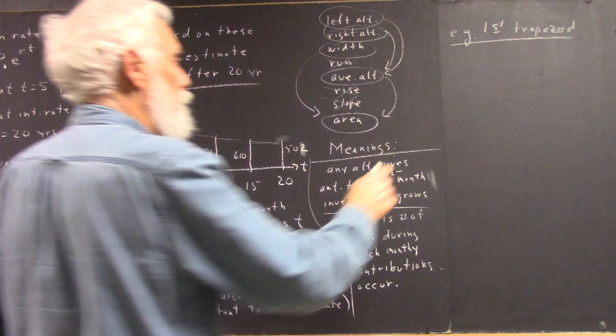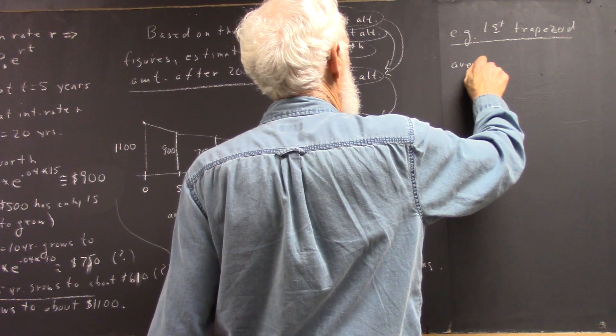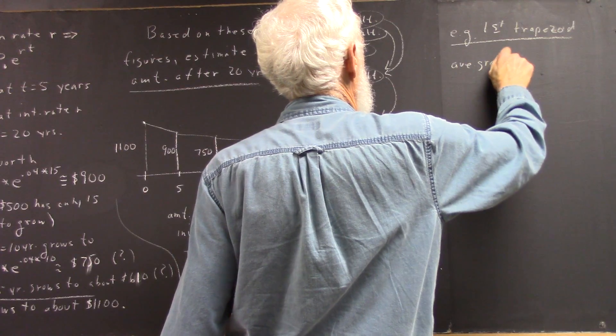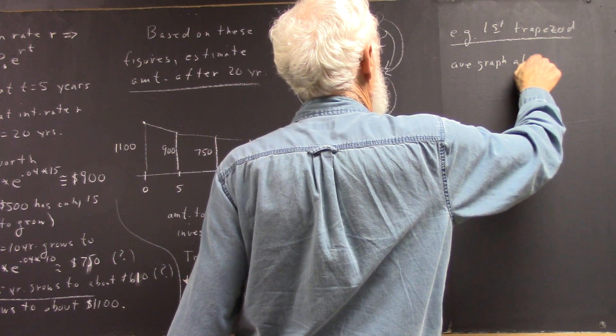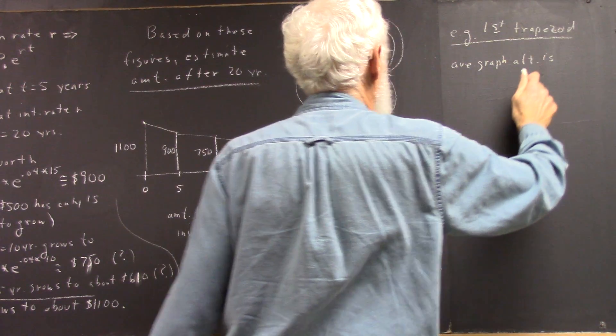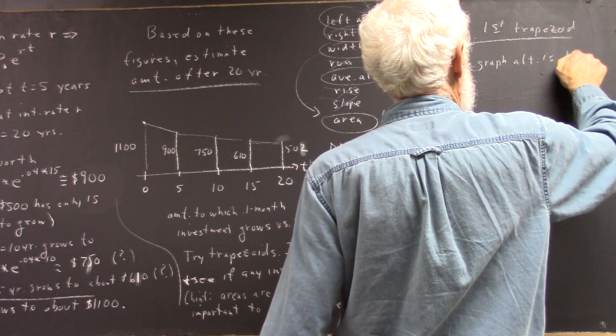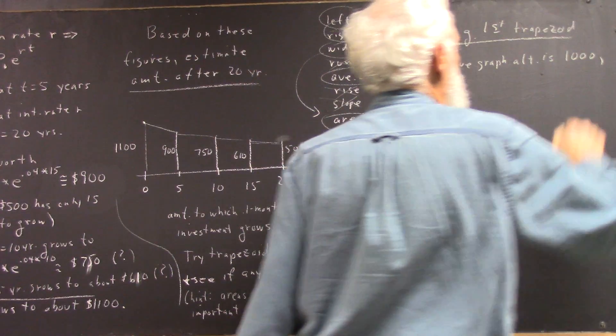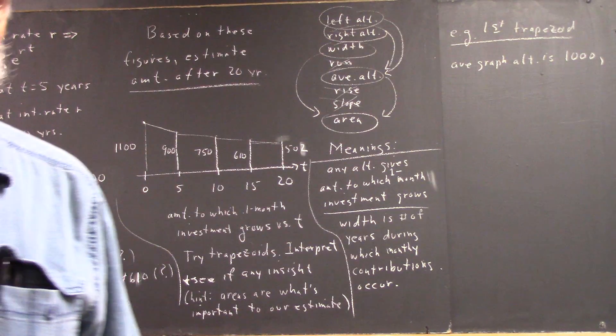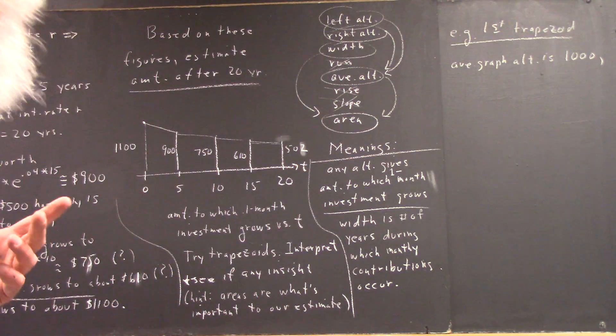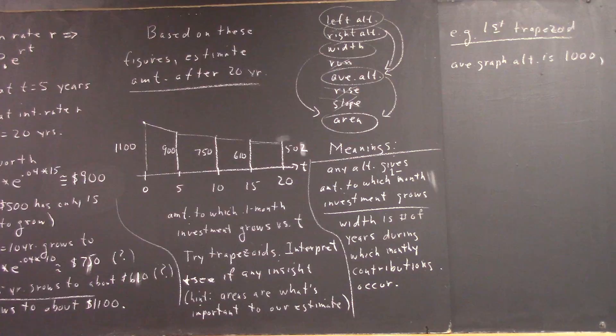Average graph altitude is 1,000. Now, what's the specific meaning of that average graph altitude?